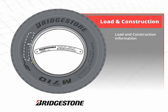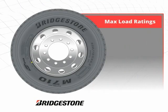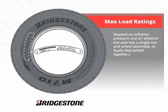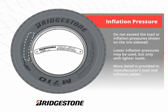Load and construction information is found in this area of the tire. Ply rating and load range — the chart shows the relationship between load range and ply rating, or PR. These designations provide a relative indication of maximum inflation pressure and the corresponding maximum load for which a tire is designed, and are sometimes considered an indicator of relative casing strength. Maximum loads depend on inflation pressure and on whether the axle has a single tire and wheel assembly, or duals — two bolted together. Dual load ratings are somewhat lower than single ratings to compensate for typical mismatching of inflation pressure, as well as momentary overloading if the tires encounter an uneven road surface. Do not exceed the load or inflation pressures shown on the tire sidewall. Lower inflation pressures may be used, but only with lighter loads. More detail is provided in manufacturer's load and inflation tables.